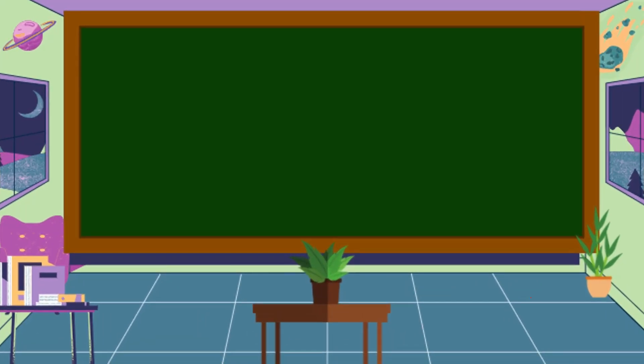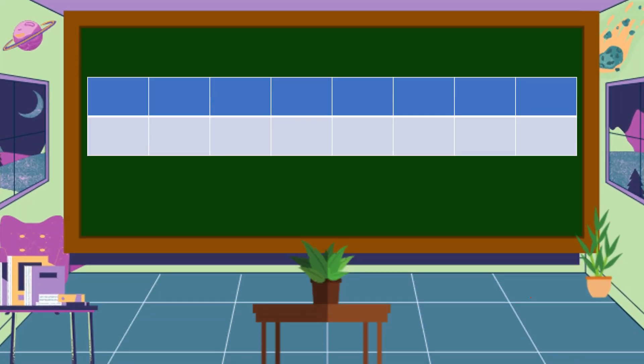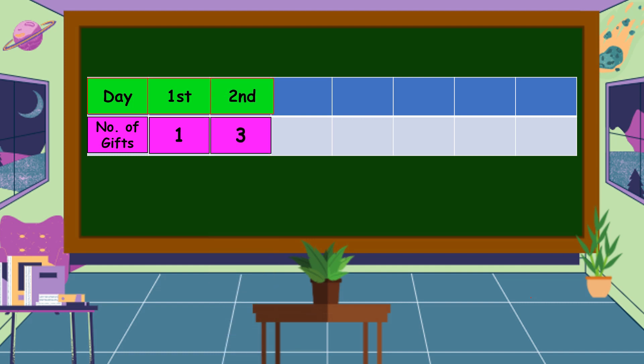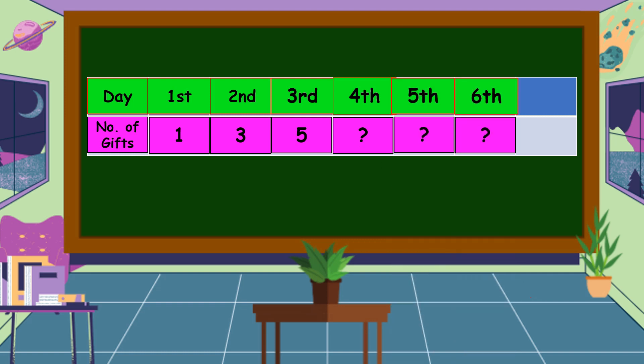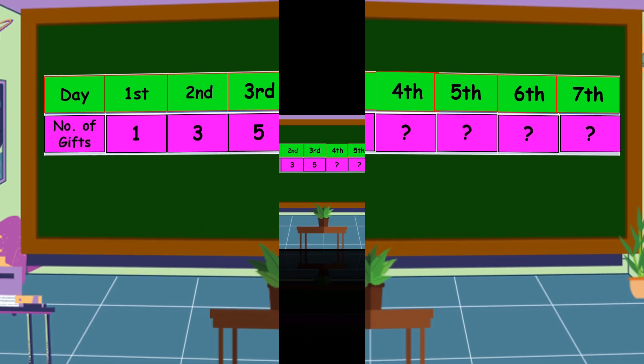To answer our problem, we're going to use a table. The first row represents the day. The second row represents the number of gifts. So for the first day, her mother received one gift. For the second day, she received three gifts. For the third day, she received five gifts. For the fourth, fifth, sixth, and seventh days: unknown.